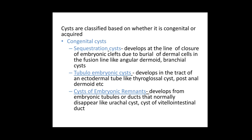Under congenital cysts there are three variants. First, sequestration cysts, which develop at the line of closure of embryonic clefts due to burial of dermal cells in the fusion line — classically the sequestration dermoid. Certain other congenital swellings that are cystic, such as cystic hygroma and branchial cysts, may also have some sequestration involved and are included in this category or under 'others.'